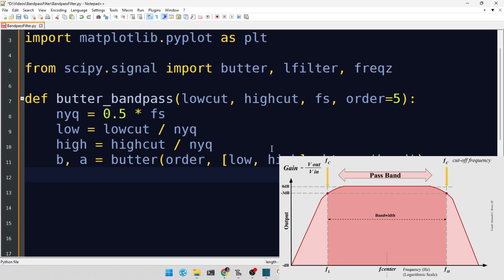With our filter coefficients ready, let's apply the filter to our data. This function will take our raw signal and return a version that emphasizes frequencies between our low-cut and high-cut values.